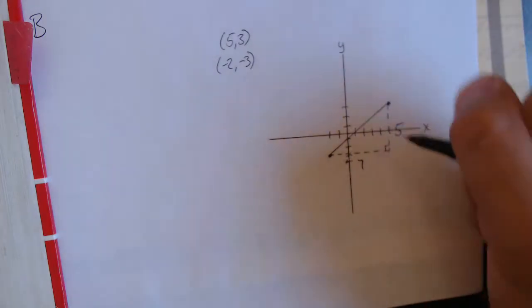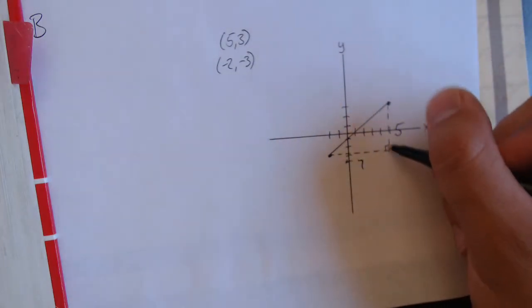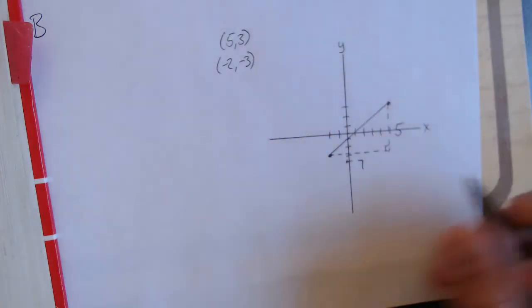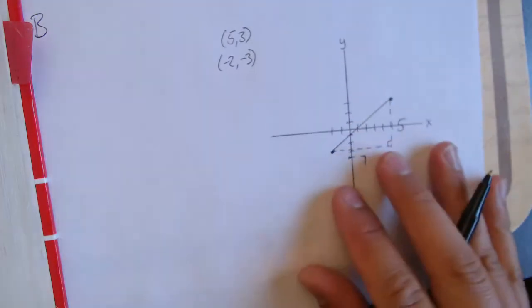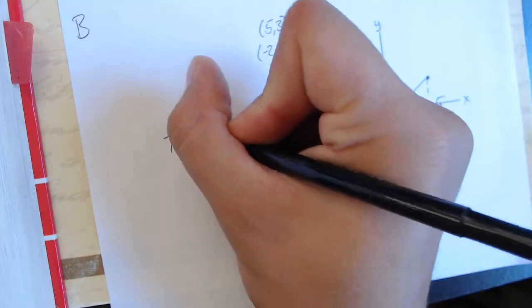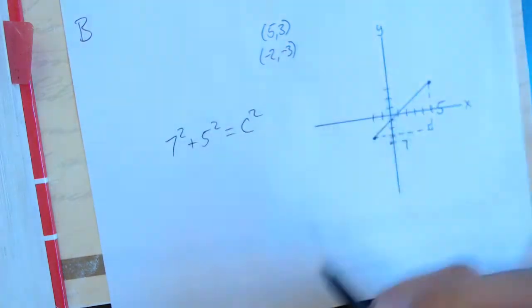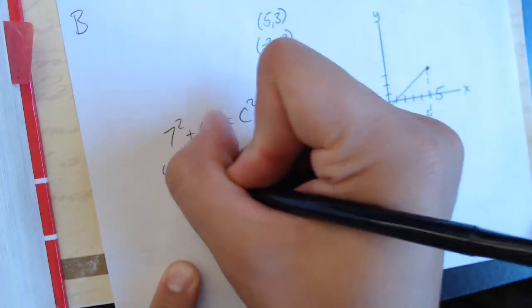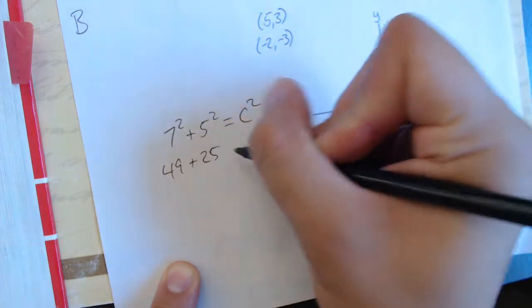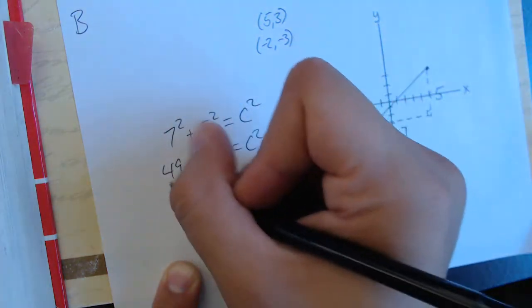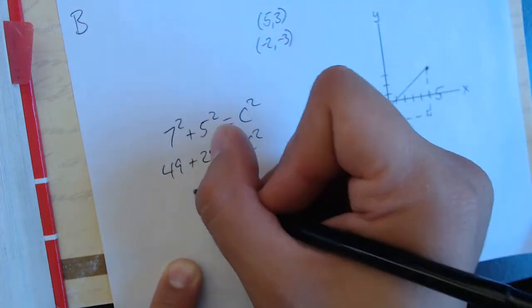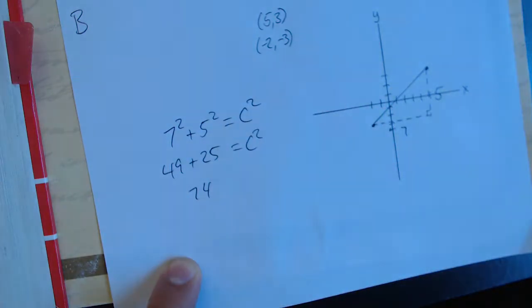We just have to figure out what our hypotenuse is now. Since this is the 90 degree angle, that is C. So then we can write over here using Pythagorean Theorem, 7 squared plus 5 squared equals C squared. That simplifies to 49 plus 25 equals C squared. 49 plus 25 becomes 74.